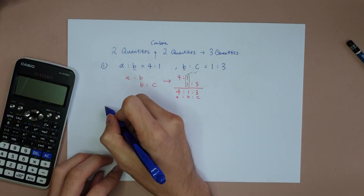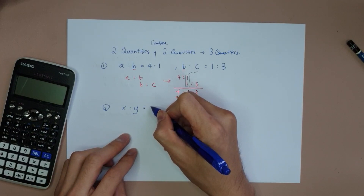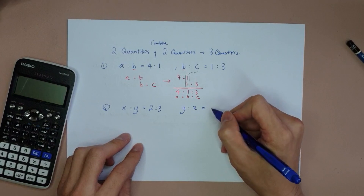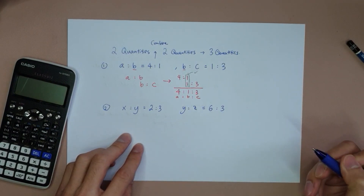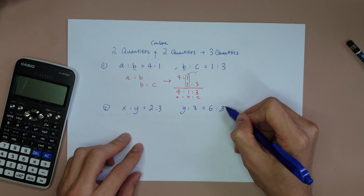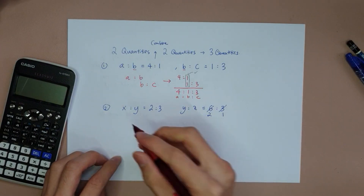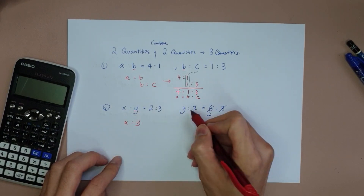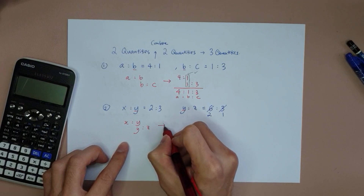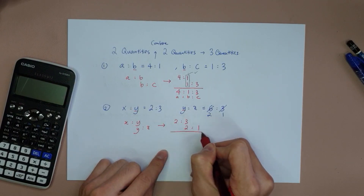Let's increase the difficulty a bit. Number 2: given X to Y equals 2 to 3, and Y to Z is stated as 6 to 3. Notice that 6 to 3 can be simplified — divide both by 3 to get 1 to 2 in simplest form. Now I'll combine: X dot dot Y in the middle, then Z. Writing it out: X to Y is 2 to 3, and Y to Z is 1 to 2. The problem is the middle numbers — Y is 3 on one side and 1 on the other — they are not the same.